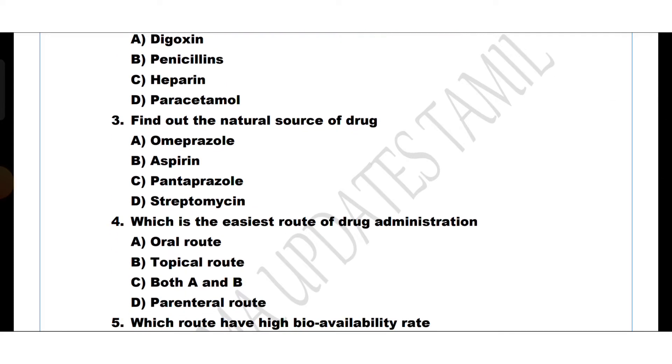Question number 3. Find out the natural source of drug. Option A: Omeprazole, Option B: Aspirin, Option C: Pantoprazole, Option D: Streptomycin.